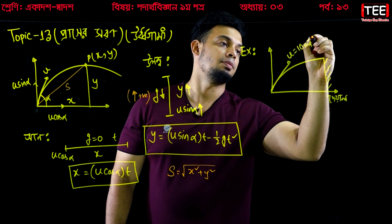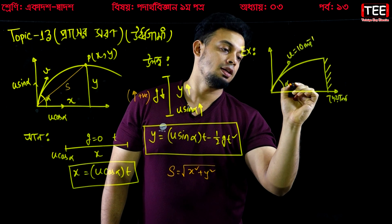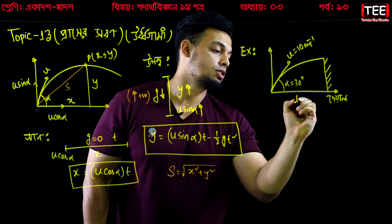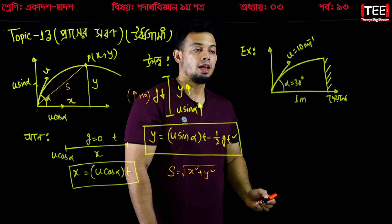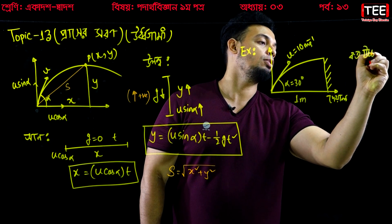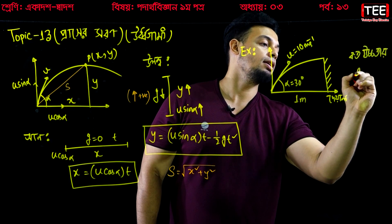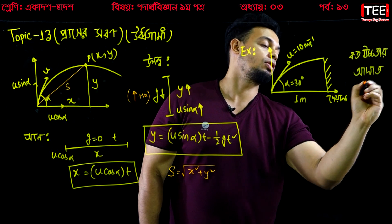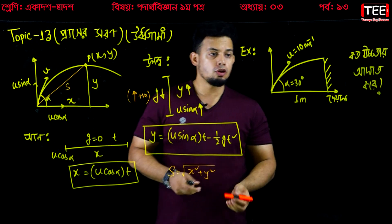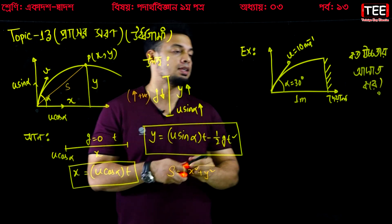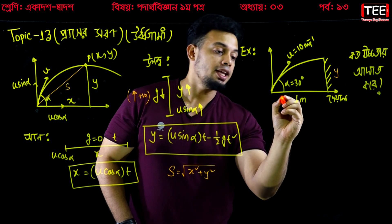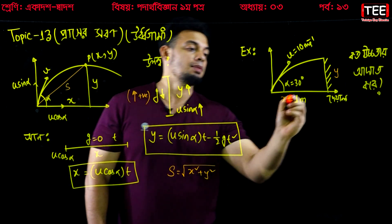Let's use the values: u is 10 meters per second, alpha is 30 degrees, and dA is 1 meter. How much is it? Where is it? dA — if dA is 1 meter, which component should be y?